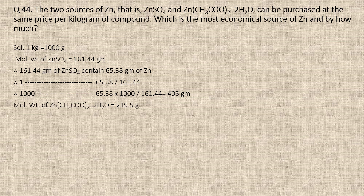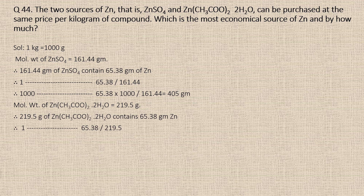The molecular weight of zinc acetate dihydrate is 219.5 gram. From the molecular formula, one mole of zinc acetate dihydrate contains one mole of zinc. Therefore, 219.5 gram of zinc acetate dihydrate contains 65.38 gram of zinc. The amount of zinc in one gram of zinc acetate dihydrate is 65.38 divided by 219.5. Therefore, 1000 gram of zinc acetate dihydrate contains 65.38 divided by 219.5 into 1000, which is equal to 297.8 gram of zinc.